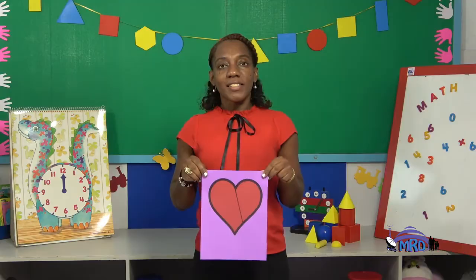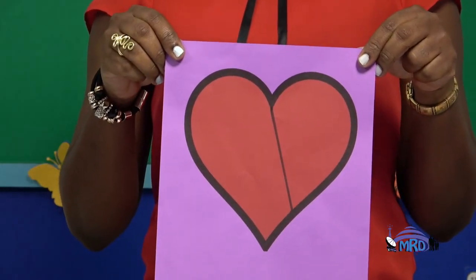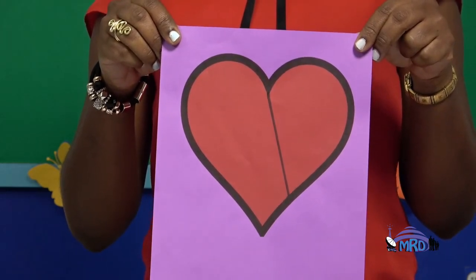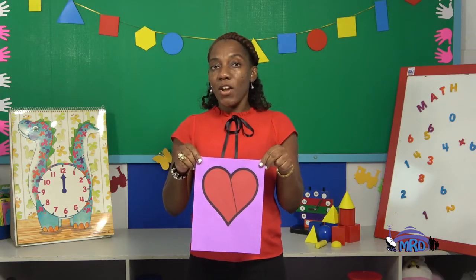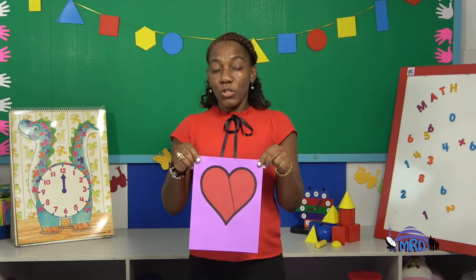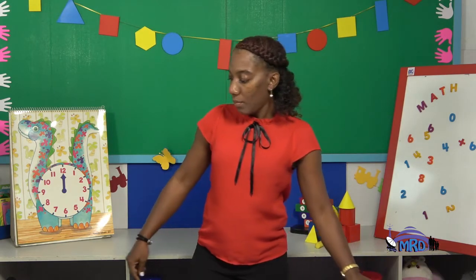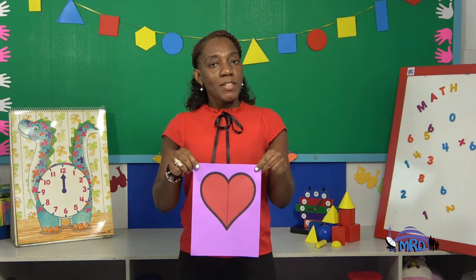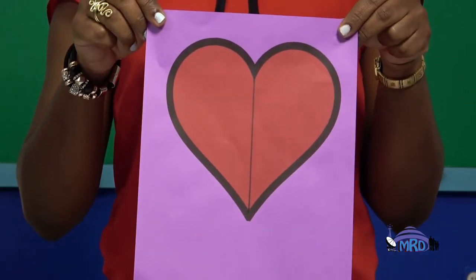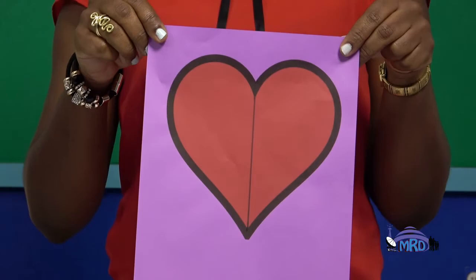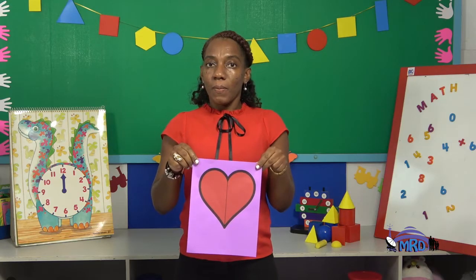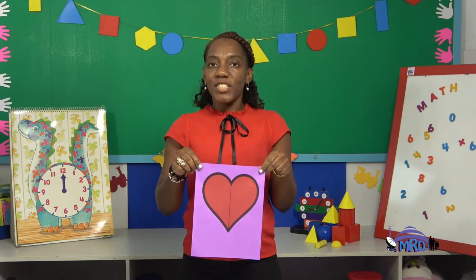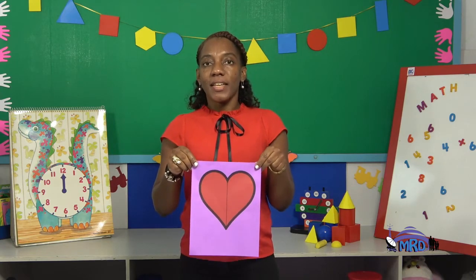Now I have a heart. Look at this heart. Are both parts of this heart the same? Take your time. No, this heart is not divided into half. You're doing a great job. Here's another heart — what do you notice? Is this heart divided into half? Are both sides the same? Yes! Great job. This heart is divided into half.